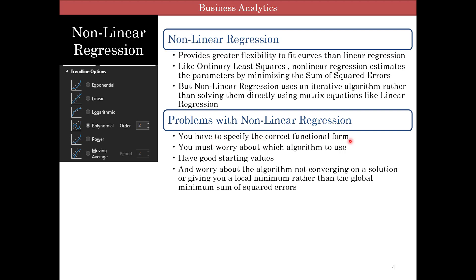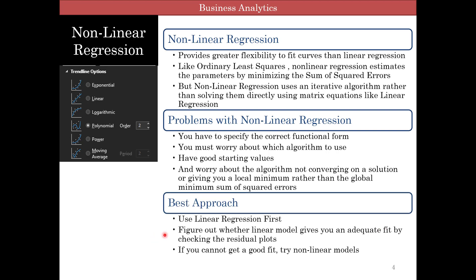You have to specify the correct functional form, worry about which algorithm to use, have good starting values, and worry about the algorithm not converging to a solution or getting stuck at a local minimum rather than the global minimum. So the best approach is to use linear regression first and check whether the linear model gives an adequate fit by examining the residual plots. Only if the linear model doesn't work should you try nonlinear models.